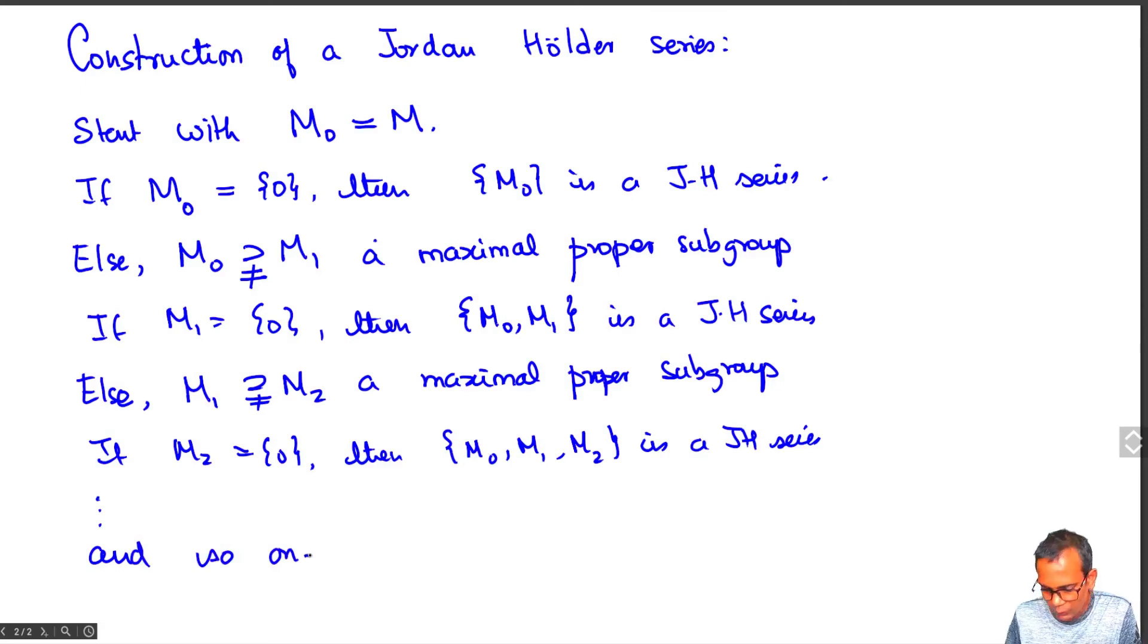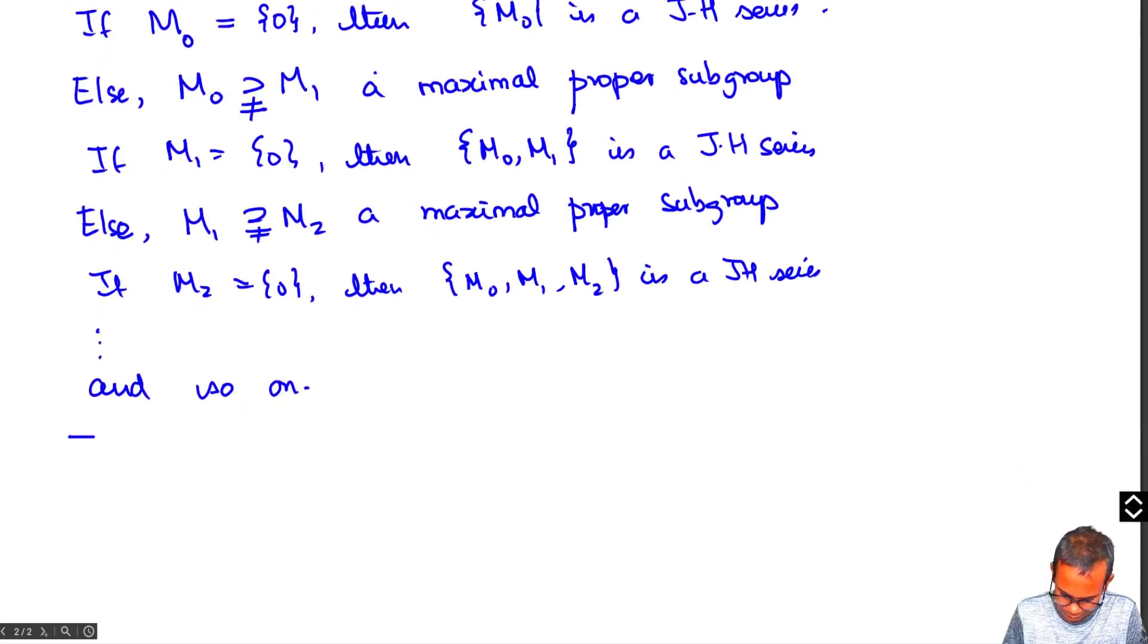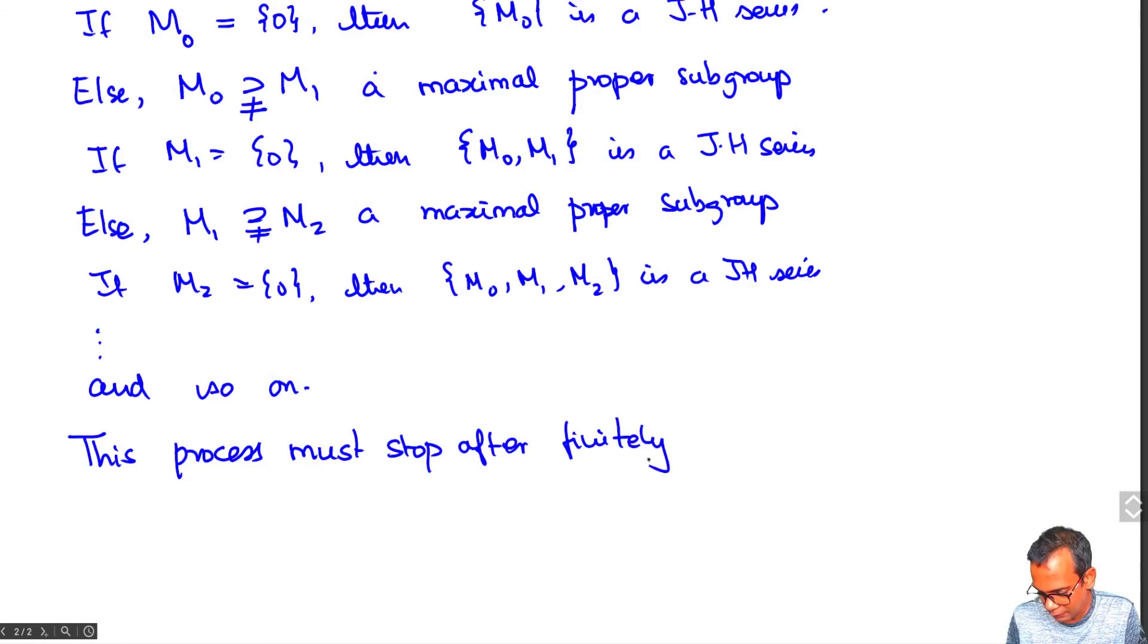Now, once again, as we argued before, if this process never stops, then we will have a violation of the descending chain condition. So this process must stop after finitely many steps due to the descending chain condition.